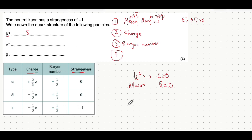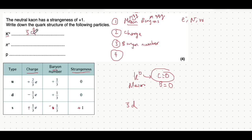Now that we know it has an anti-strange quark — which has baryon number of -1/3, strangeness of +1, and charge of +1/3 e — we need to balance it out to get a total charge of zero and baryon number of zero. The remaining quark must be a normal quark (not an anti-quark), and it will be a down quark. A down quark contributes -1/3 e to balance the charge to zero, adds +1/3 to the baryon number to give zero, and has no effect on strangeness — leaving the total strangeness at +1. So the K-naught meson is anti-strange and down.